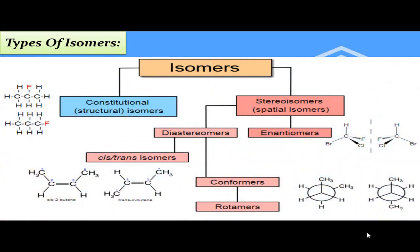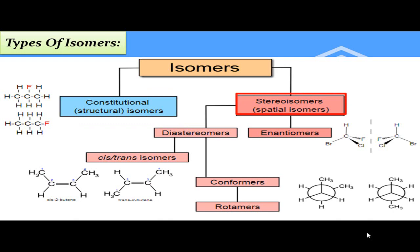Types of isomers میں constitutional isomers جن کو structural isomers بھی کہتے ہیں، اور stereo isomers جن کو spatial isomers بھی کہتے ہیں۔ Stereo isomers کو مزید دو types میں divide کرتے ہیں: enantiomers اور diastereomers۔ Diastereomers مزید conformers اور cis-trans isomers میں divide ہوتے ہیں۔